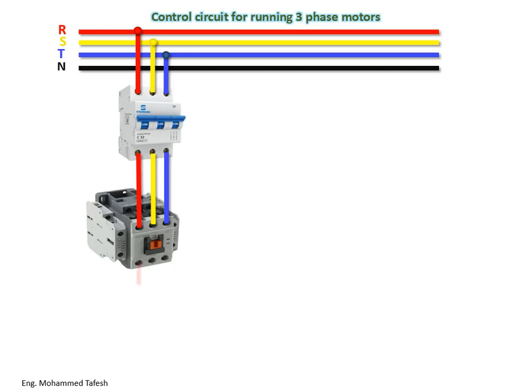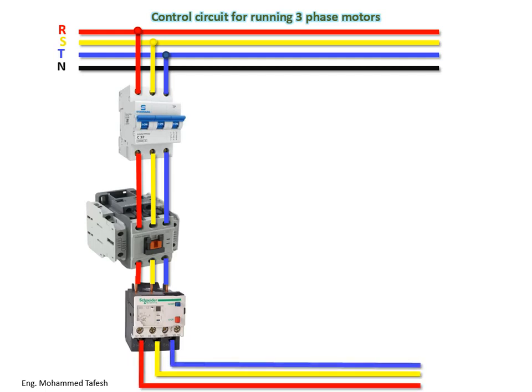From the output of the contactor, we connect the overload relay. As explained previously, there are two types of overload connections — it can be connected directly to the contactor or through other connections as shown in the presentation. In motors, certain conditions can cause a high current to be drawn. One reason is a drop in the supply voltage, which causes the motor to compensate by drawing more current, increasing the ampere percentage inside the motor and potentially leading to the burning of the thermal coils due to excessive heat.